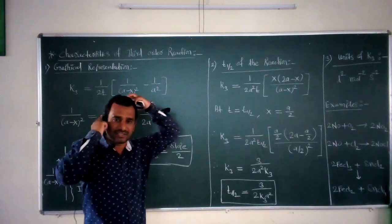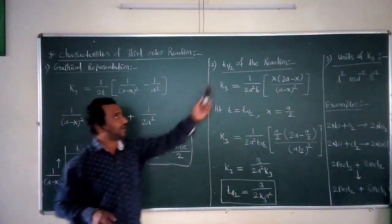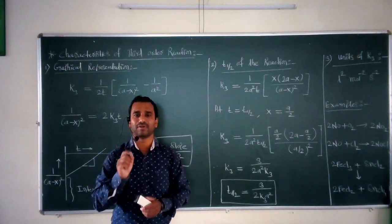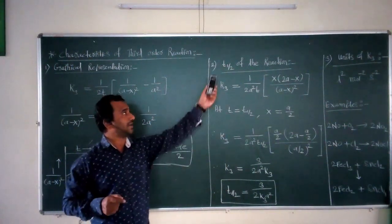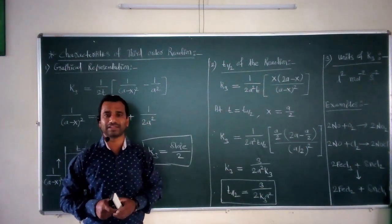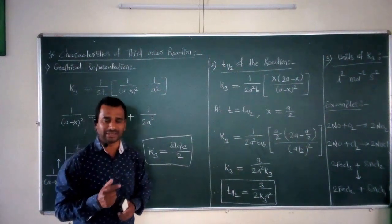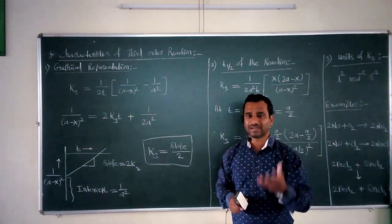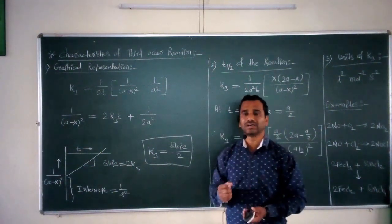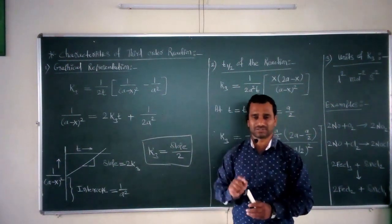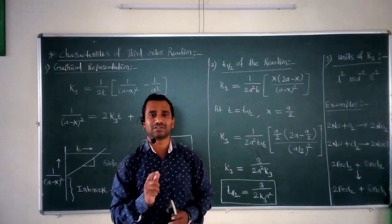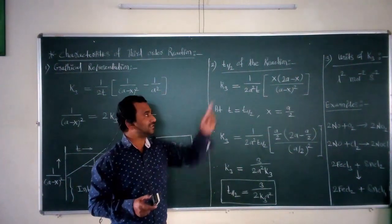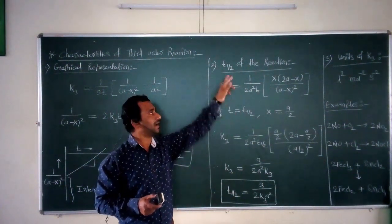The second important characteristic for this third order reaction is called as T-half of the reaction. T-half is nothing but the half-life period of the particular chemical reaction. Half-life period stands for the time which is necessary to convert the initial concentration of a reactant to half of its initial concentration. The time required to do this is called as the T-half of the particular chemical reaction.